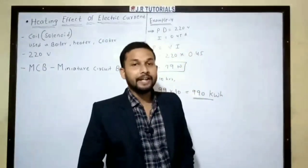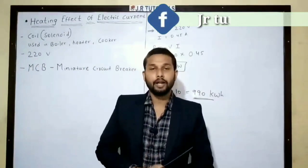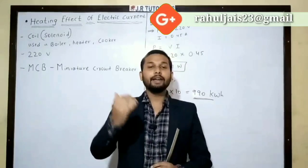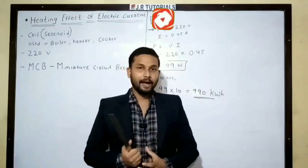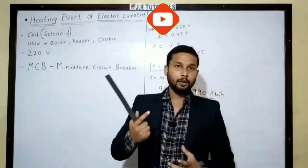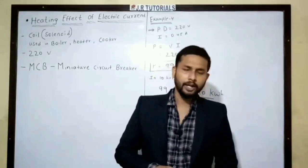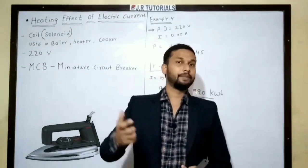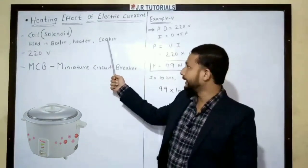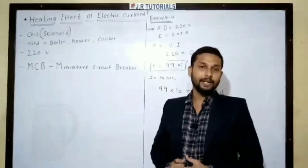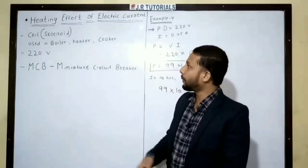Okay, so our next topic is the heating effect of electric current. We have already discussed that when current is passed through an object, heat is generated. There are many examples of electronic appliances — electric cooker, heater, boiler. These are all examples which use current as a source, and that is the heating effect.